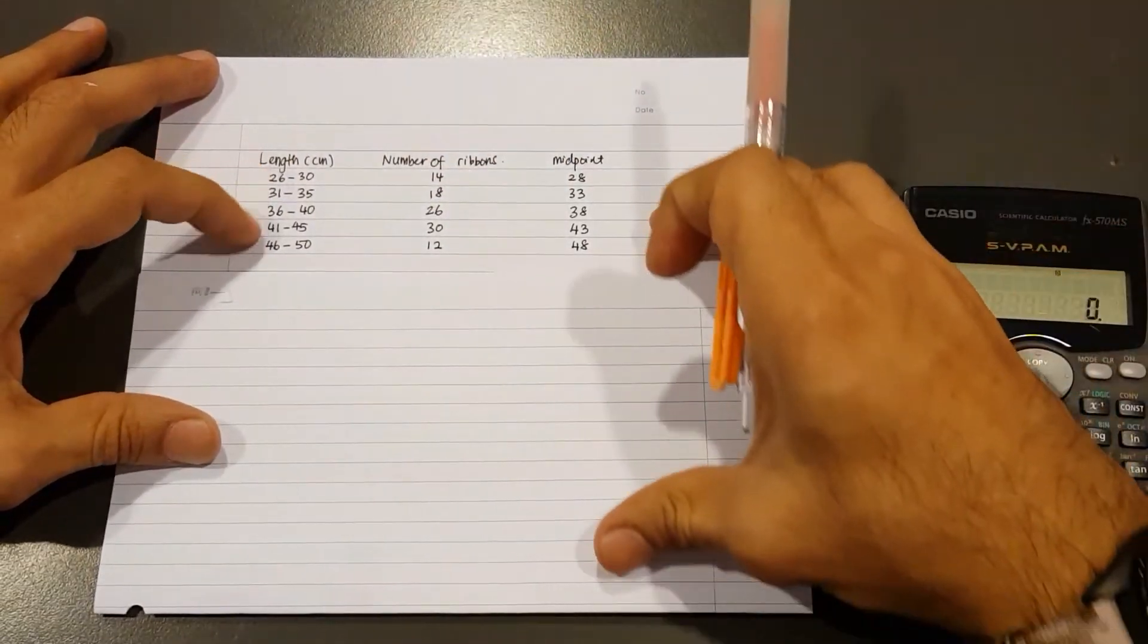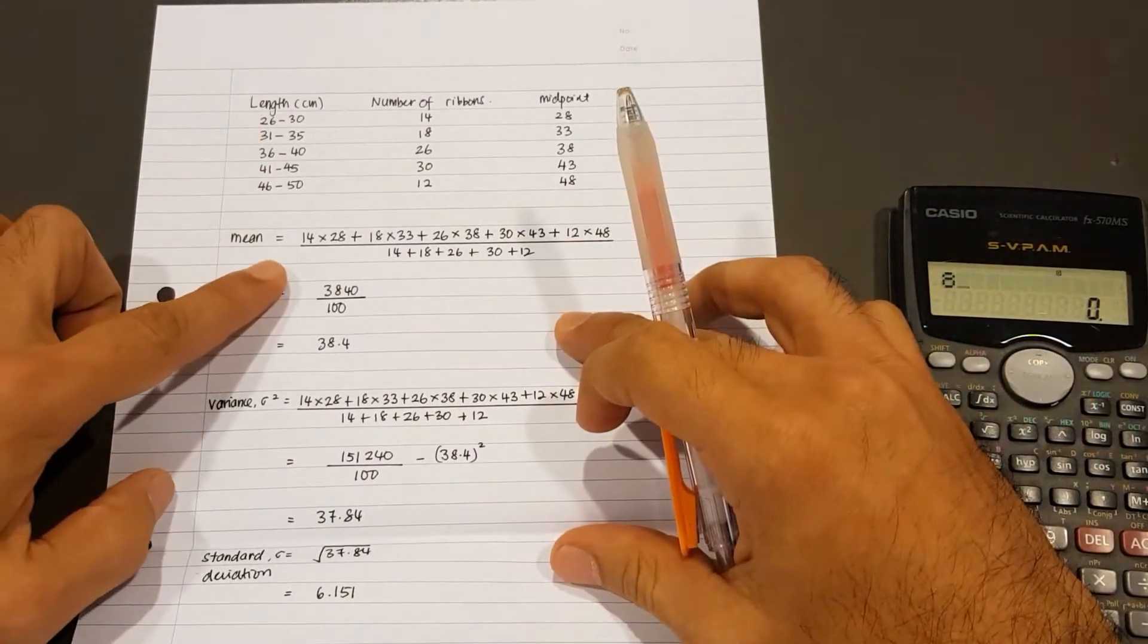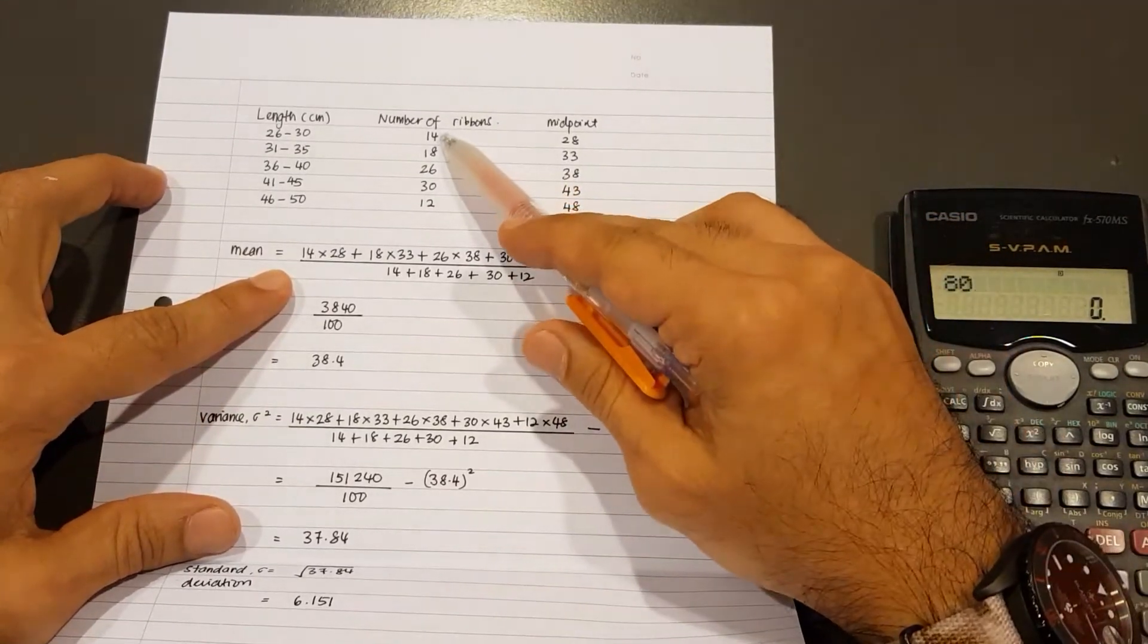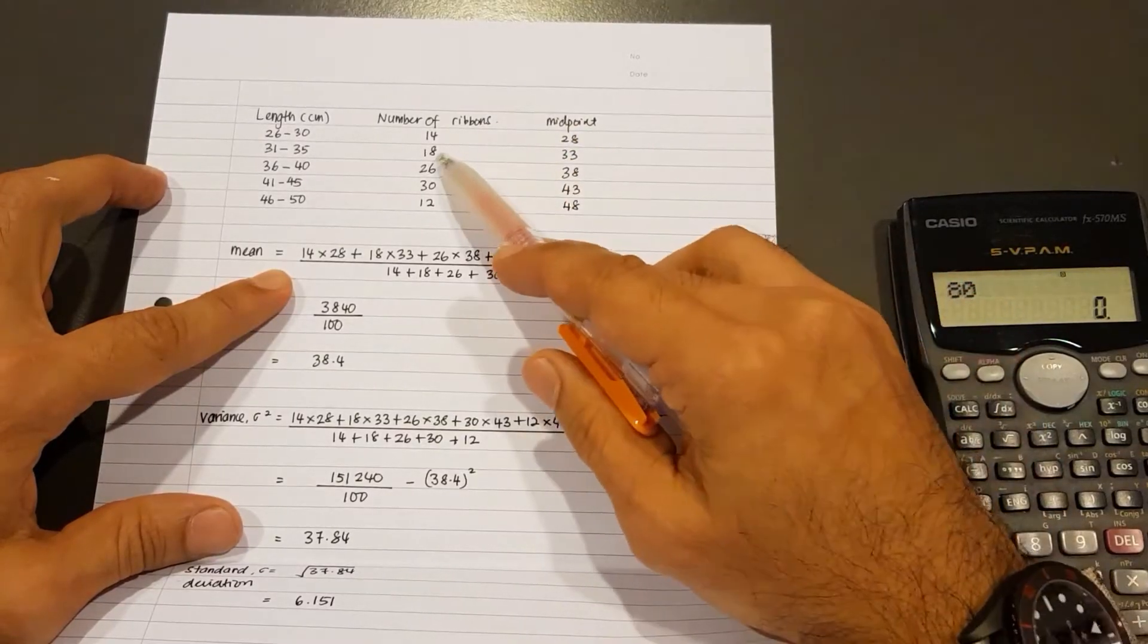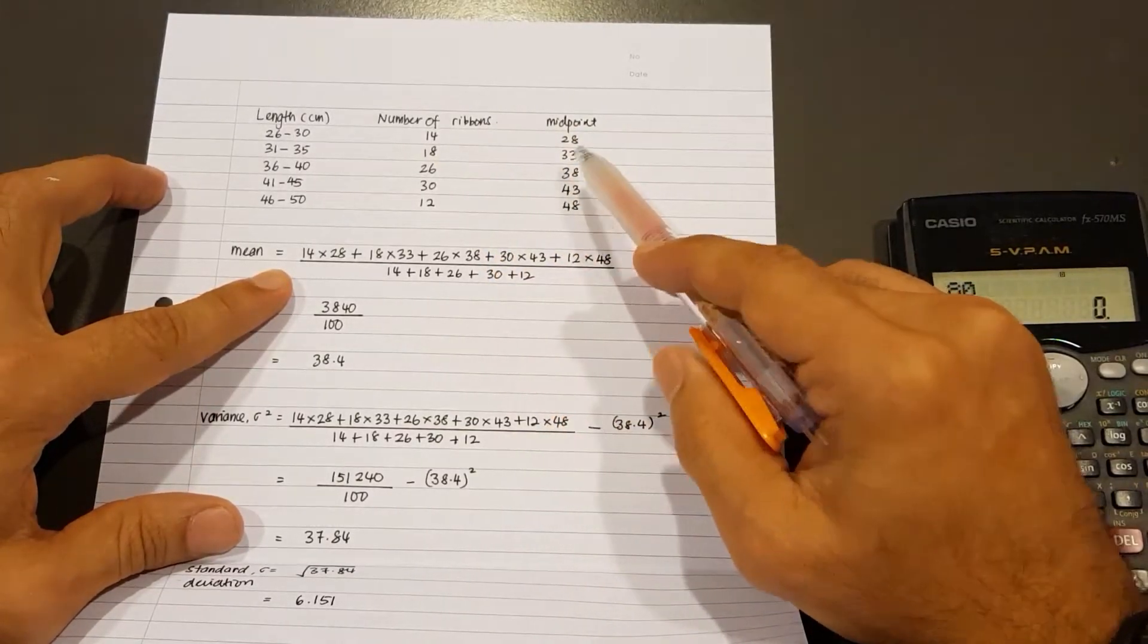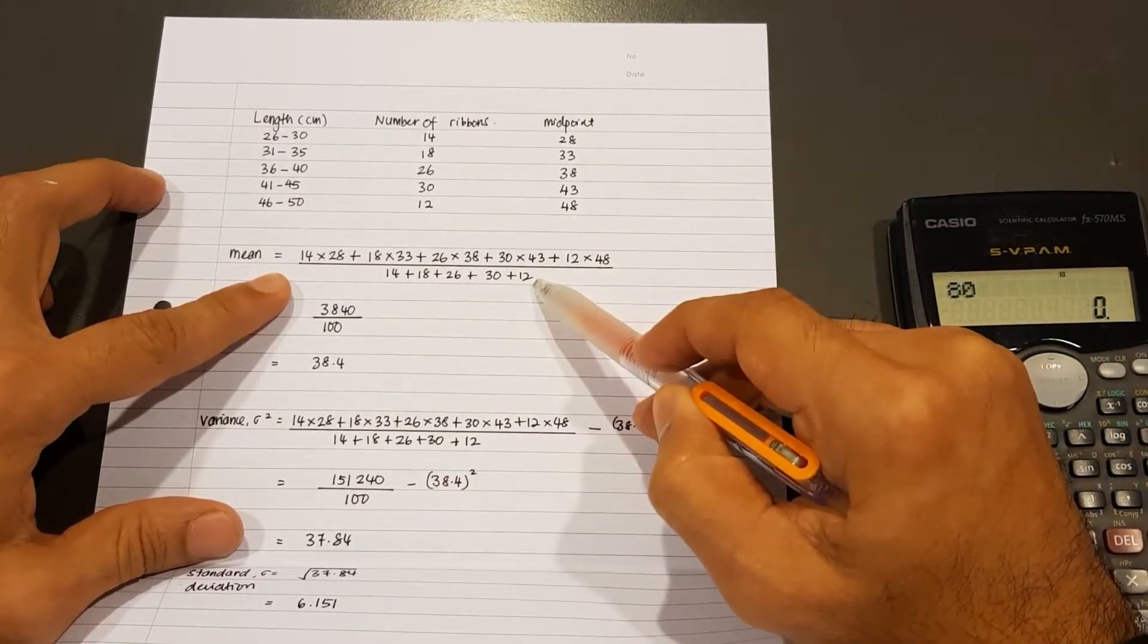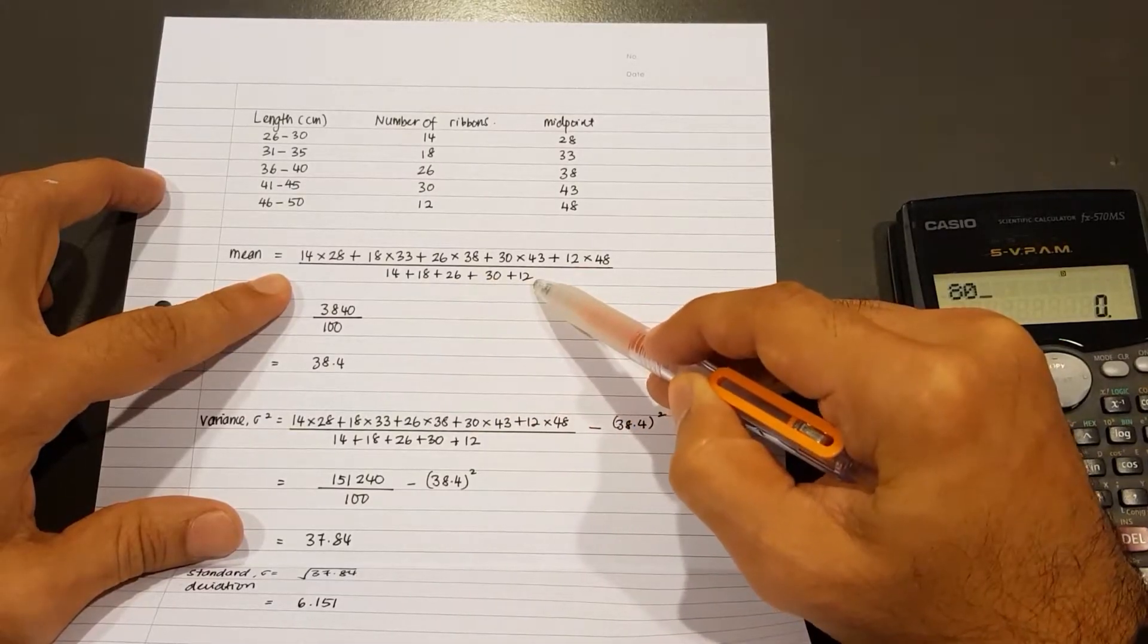What I've done here is I've gone ahead and prepared the steps required. So that's mean. Now if we calculate the mean manually, it simply means the frequency multiply with the midpoint, and then next frequency multiply with the next midpoint, and we have to find the sum. The denominator would be the total frequency, in this case here it would be 14 plus 18 plus 26 plus 30 and plus 12.